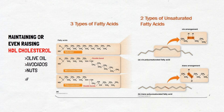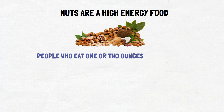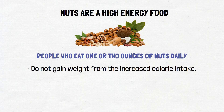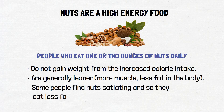Polyunsaturated fats are found in foods such as fish, flaxseed, and sunflower oil. A good example of a food that is high in unsaturated fat are nuts. Nuts are rich in healthy unsaturated fat and also contain protein, some minerals, and fiber. Nuts are a high-energy food — 160 to 180 calories for one ounce serving of nuts. Research on nuts in the diet shows that people who eat one or two ounces of nuts daily do not gain weight from increased calorie intake, are generally leaner with more muscle and less fat in the body, and often find nuts satiating so they eat less food later.